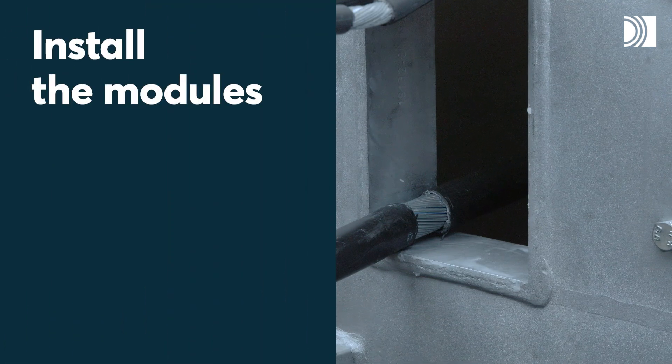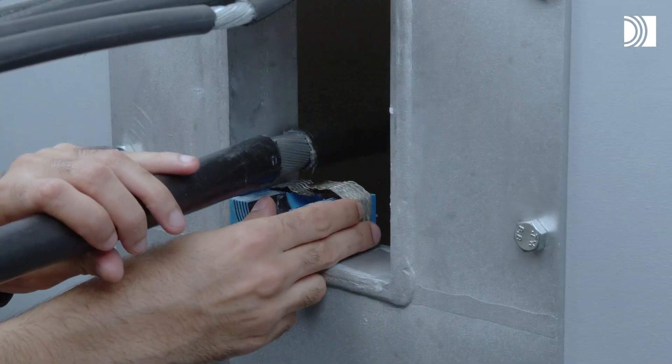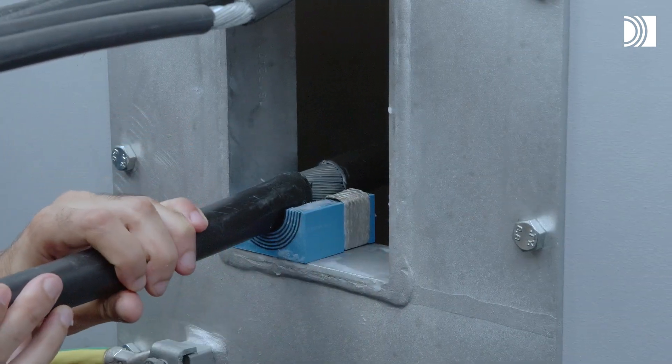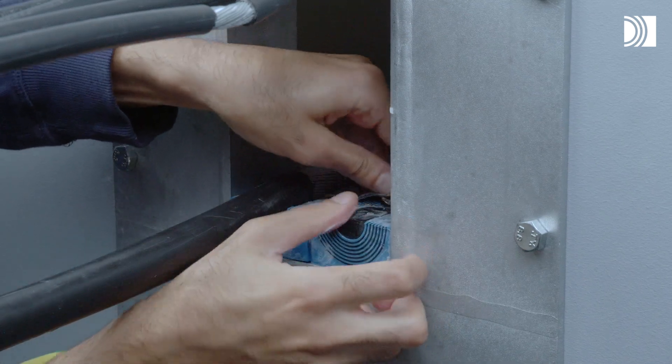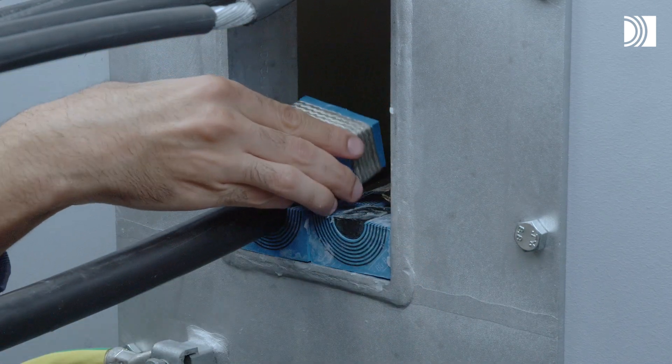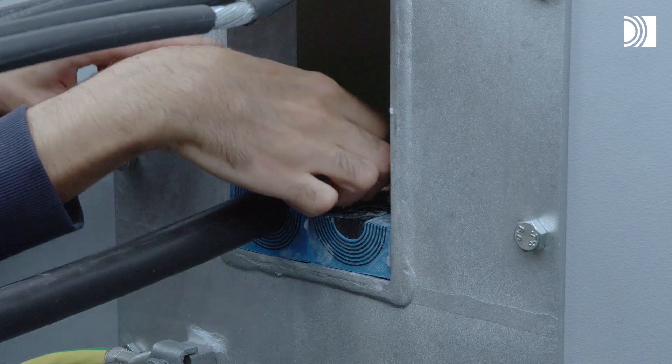Install the modules. Place modules according to your packing plan. The cable armour shall be visible outside the module at the termination side. Place cables and the corresponding module halves on top.